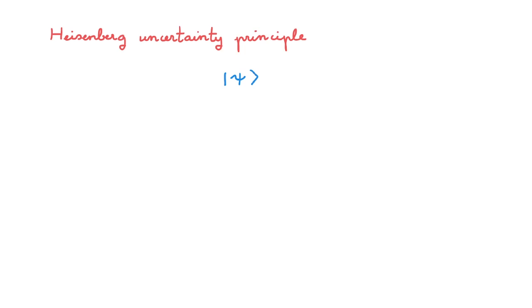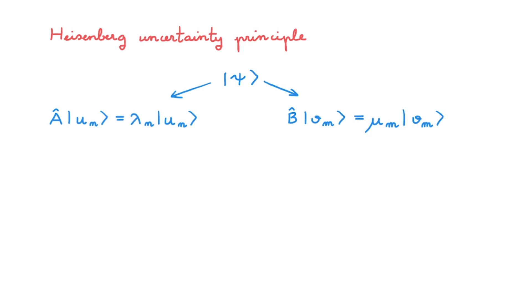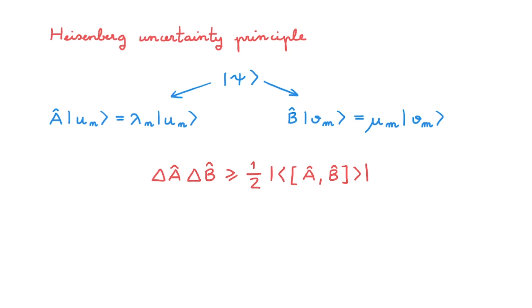We're now finally ready to introduce the Heisenberg uncertainty principle. The setup is as follows: we have a state psi and two operators. The first is A with its eigenvalue equation, and the second is B with its own eigenvalue equation. The Heisenberg uncertainty principle tells us that the root-mean-square deviation of A multiplied by the root-mean-square deviation of B is larger than or equal to one half times the absolute value of the expectation value of the commutator of A and B. This is a bit of a mouthful, but in the rest of the video we'll explore what the principle means conceptually. If you have encountered the Heisenberg uncertainty principle before, it'll probably have been in terms of position and momentum, but the relation is actually general for any two observables A and B, so we'll focus on the most general form today.